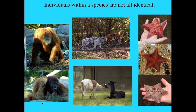If we look at a diverse number of species and some individuals within them, we can see that they're not all identical. Within different groups of mammals, there are indeed variations within the species, and with invertebrates as well. With the starfish, you can see that they don't all have the same color or the same shape, and yet they're all members of the same species.